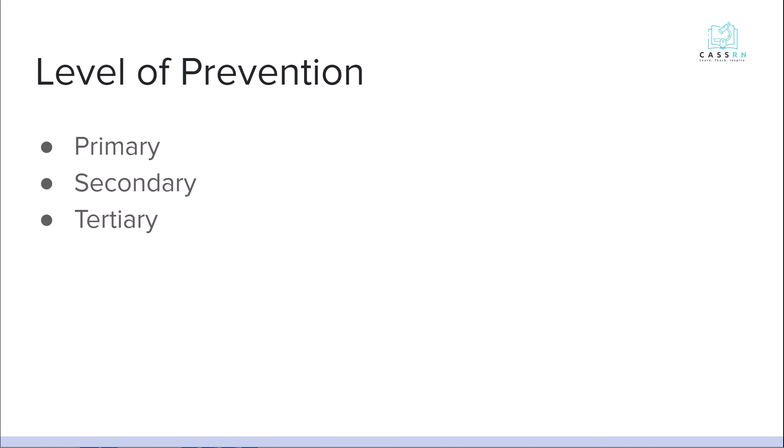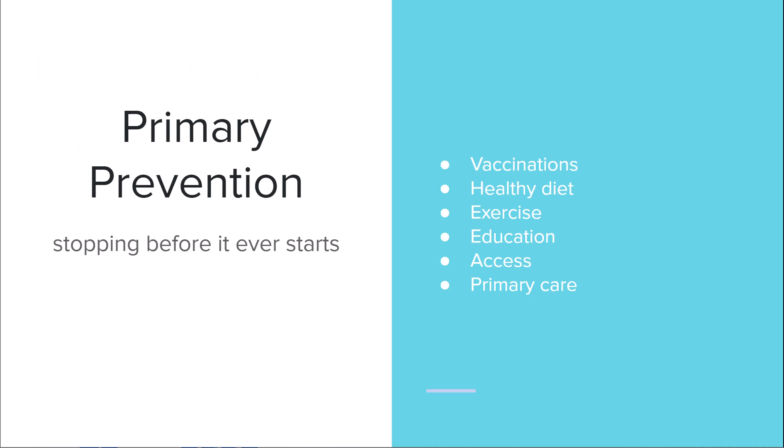There are three types of prevention: primary, secondary, and tertiary. Primary prevention is stopping it before it ever starts. This includes vaccinations, healthy diet, exercise, education, and access to health care. This is typically done in a primary care office — their family practice provider is going to be the person doing primary prevention.